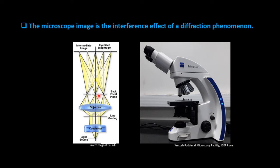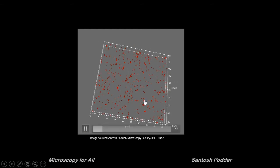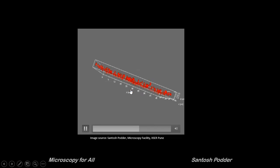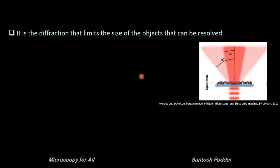In a nutshell, the microscope image is the interference effect of a diffraction pattern. Due to diffraction, we do not see an image of a sub-resolution bead — which is around 200 nanometers — as a round point; rather it will look spread in Z. It is the diffraction that limits the size of objects that can be resolved. Smaller the point source, more the diffraction. As you can see, the diffraction angle of the smaller points is bigger than that of larger objects.